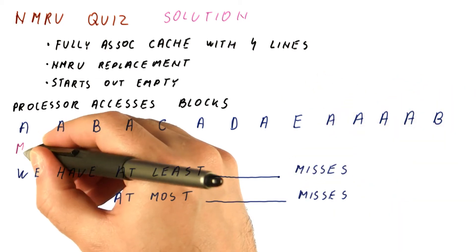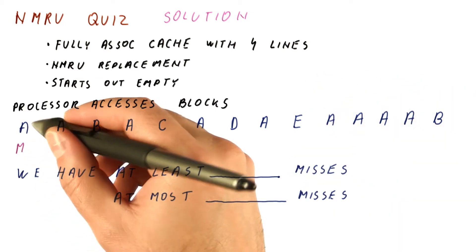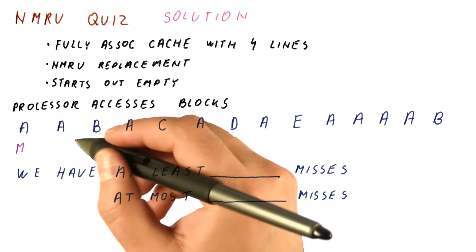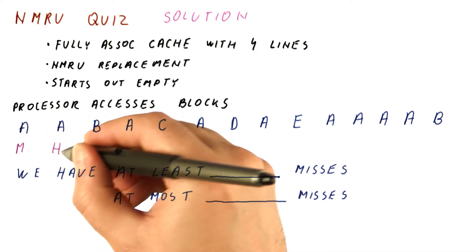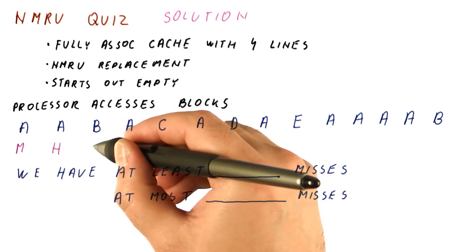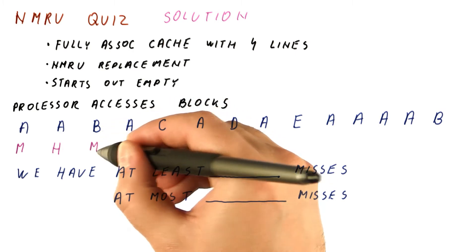This one is definitely a miss because we have nothing in the cache. So now we have brought A into the cache. This one is definitely a hit. Now we're going to access B, and this is definitely a miss.